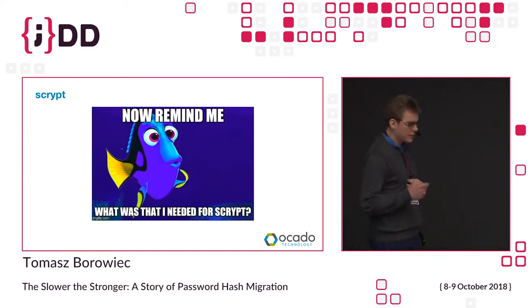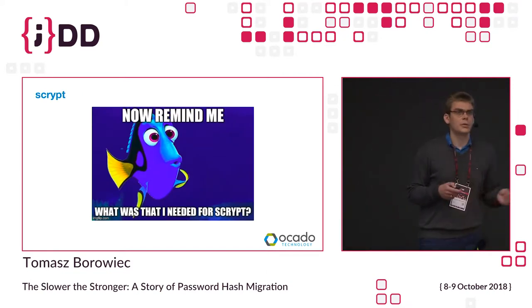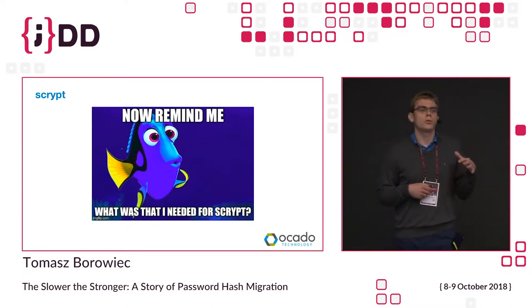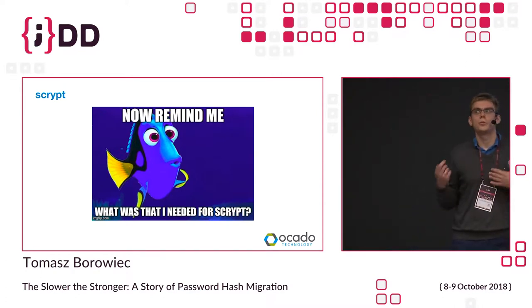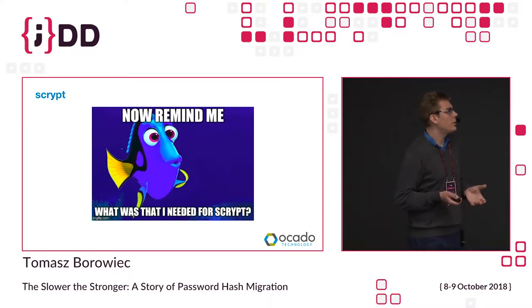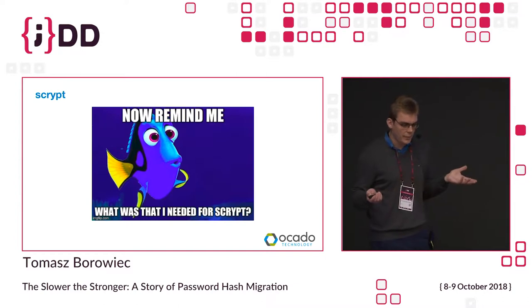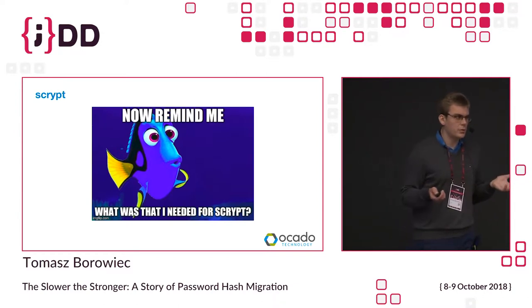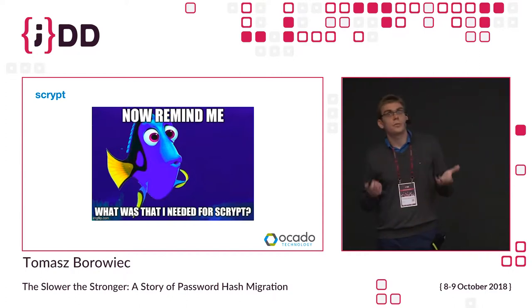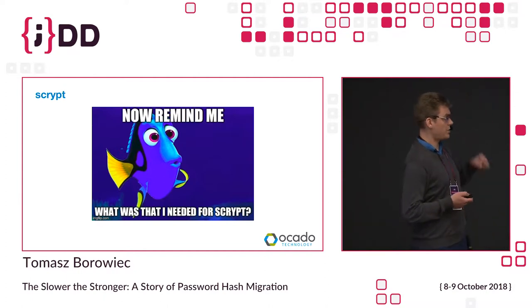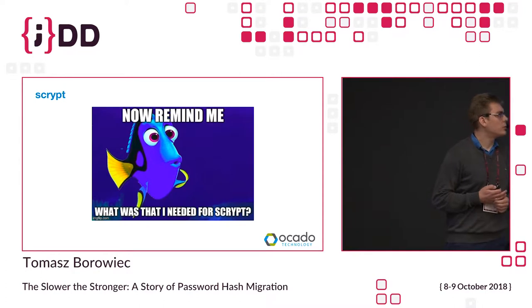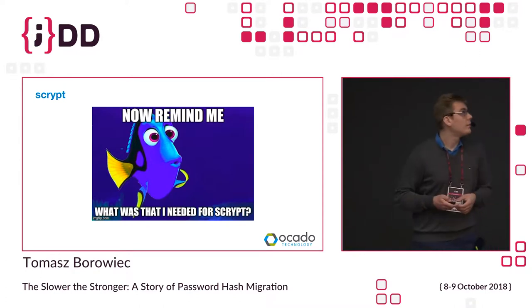Another one is Scrypt, and this is an interesting one because while the others work on CPUs, Scrypt has an option to use memory for computation. The creators thought that CPUs are rather cheap and easy to acquire, so maybe they'd choose something more expensive — they chose memory. Very neat if you want that.